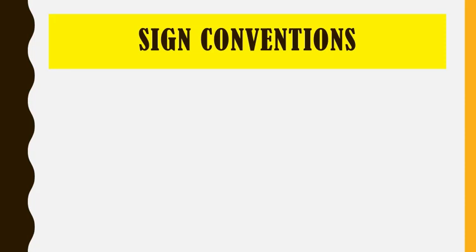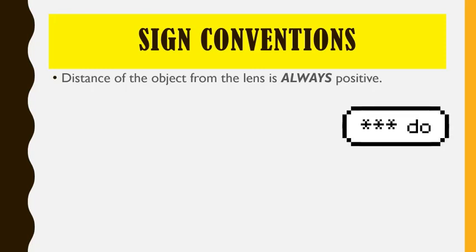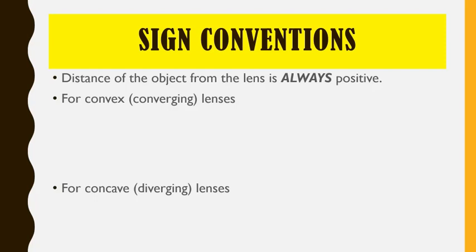You always have to remember the different sign conventions, very similar to our spherical mirrors. The following sign conventions for spherical lenses are as follows. Number 1: the distance of the object from the lens is always positive. So DO is always positive, measured in front of the lens. For convex or converging lenses, the focal length is always positive. As we discussed previously, we always have a principal focus for converging lenses that is real. That's why our focal length will be measured from the optical center of the lens towards the principal focus, and that will be measured positively.